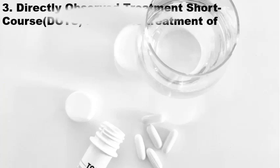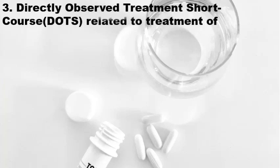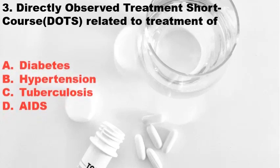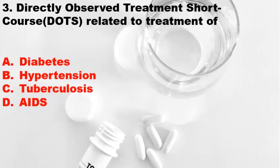Third question: Directly Observed Treatment Short Course (DOTS) is related to the treatment of — Option A: Diabetes, Option B: Hypertension, Option C: Tuberculosis, Option D: AIDS. The correct answer is Option C, Tuberculosis.